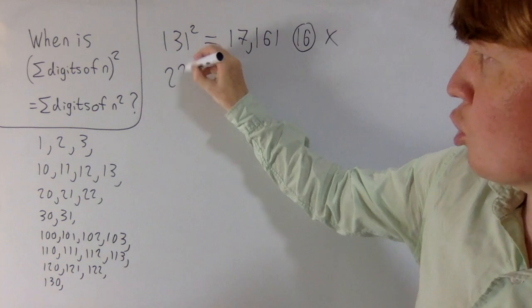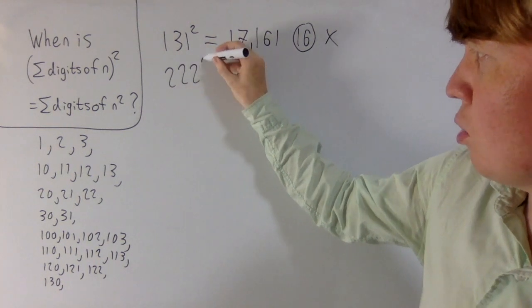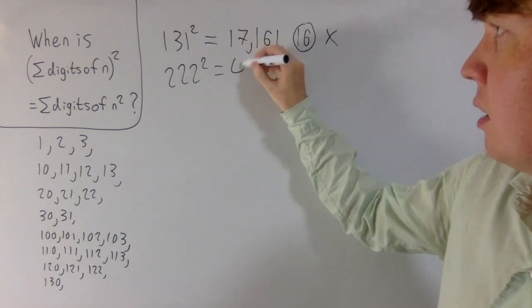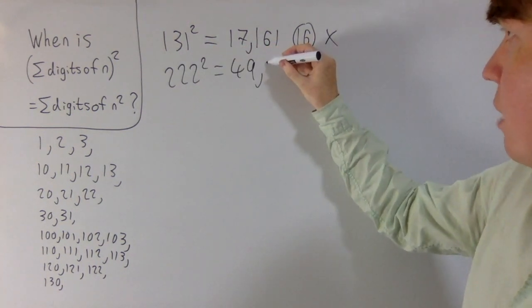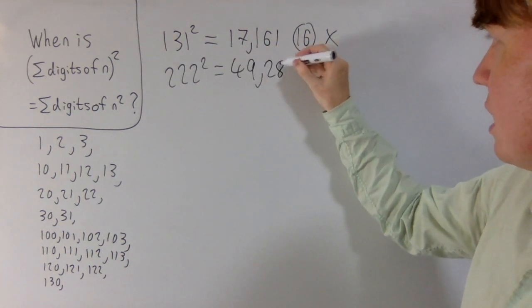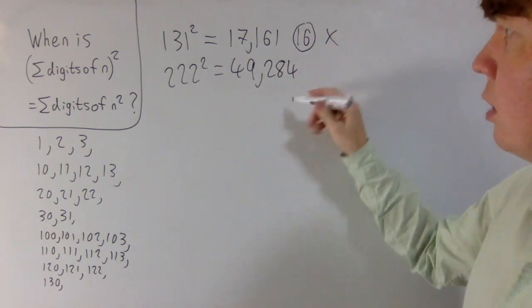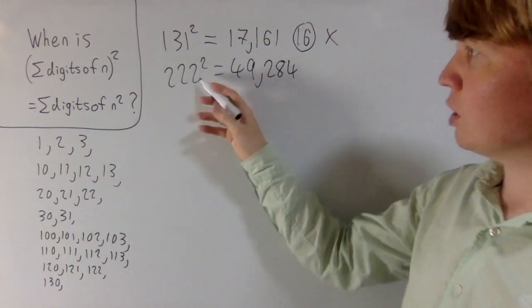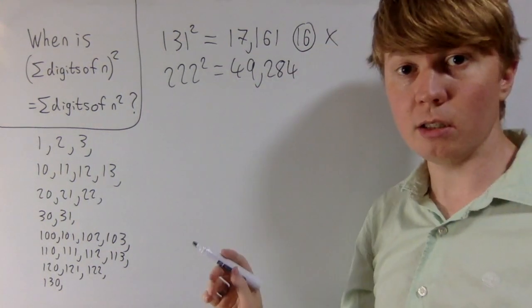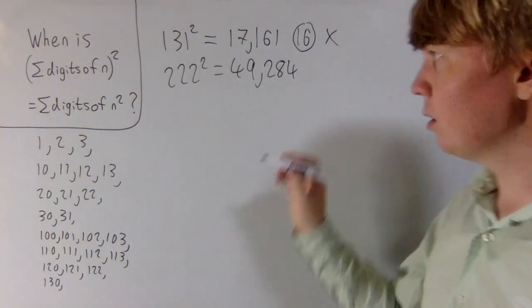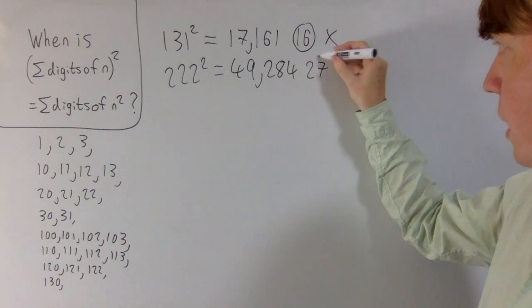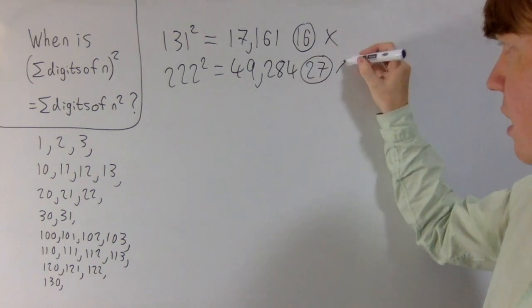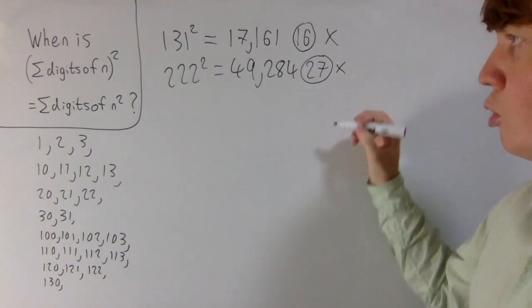If we have a look at 222 squared, this is an interesting one. This is 49,284. We want our sum of digits here to be 36, but actually the sum of digits is only 27. So again, this doesn't fit our rule.